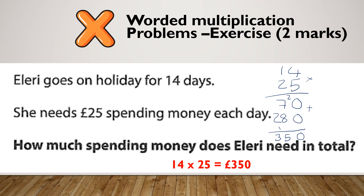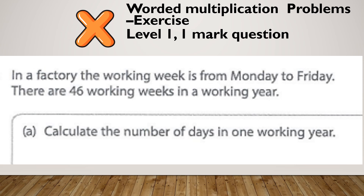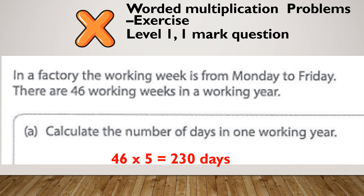One last question — a level one example, a one-mark question. In a factory, the working week is from Monday to Friday. There are 46 working weeks in a working year. Calculate the number of days in a working year. The working week is Monday to Friday, so a working week is five days. There are 46 working weeks, so to get the number of days in a working year I would do 46 times by five.